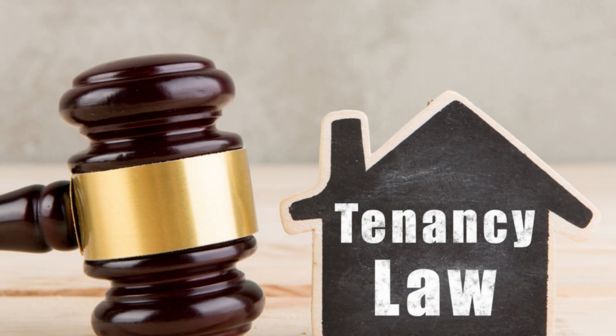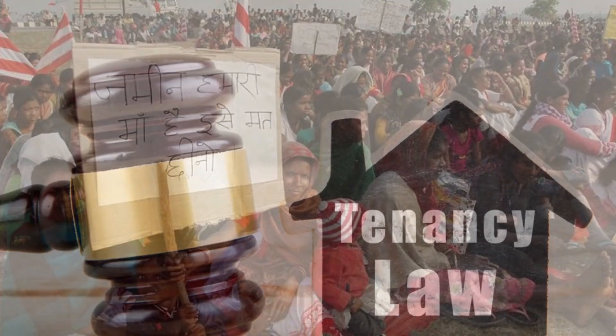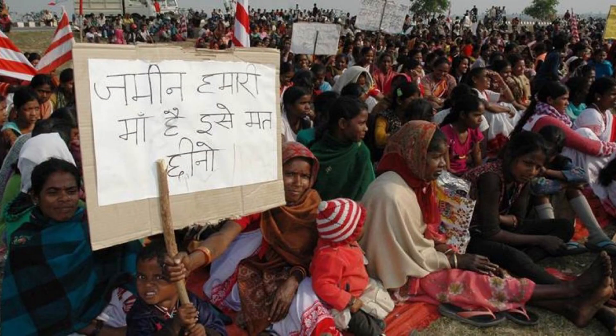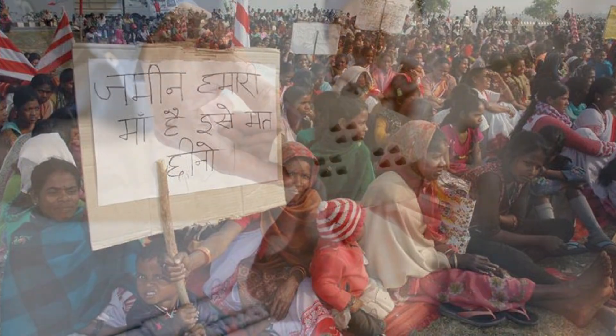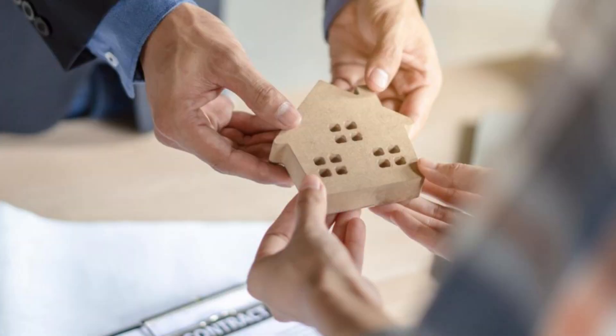The Chotanagpur Tenancy (CNT) Act, 1908, is a land rights legislation that was created to protect the land rights of the tribal population of Jharkhand, instituted by the British. A major feature of the CNT Act is that it prohibits the transfer of land to non-tribals to ensure community ownership.